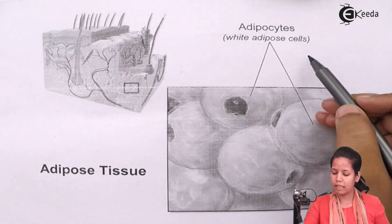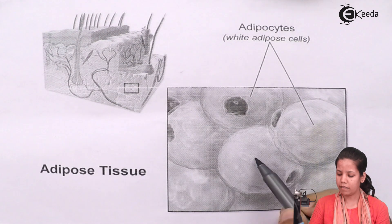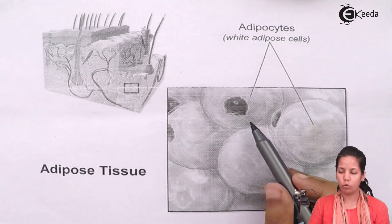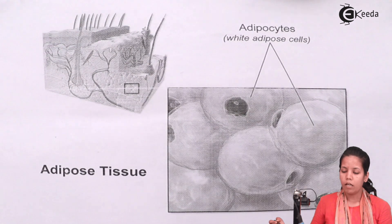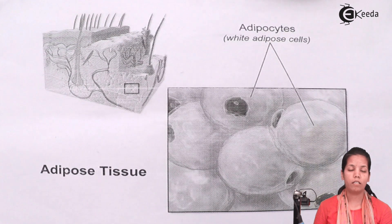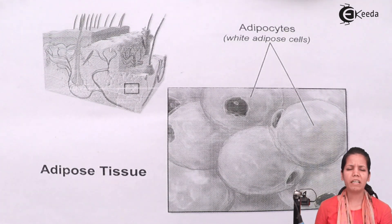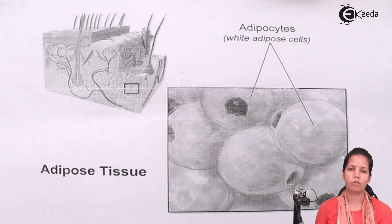This is a structure of white adipose tissue, and it has a nucleus located at its periphery. In this part of the chapter, we came across adipose tissue — how it looks, what its functions are, and what the different types are. I hope we are very clear with this concept of adipose tissue. Thank you.